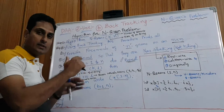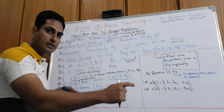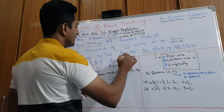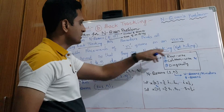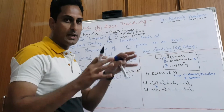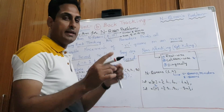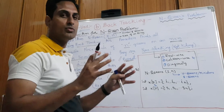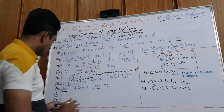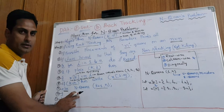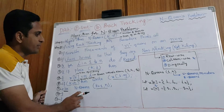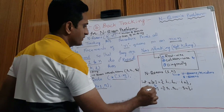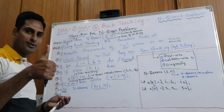Similarly, every queen should be placed in such a way that they are non-attacking — not killing each other. We need to place them such that each queen should not attack each other. This will be repeated until each queen will not be attacked. Neat explanation — all the best.